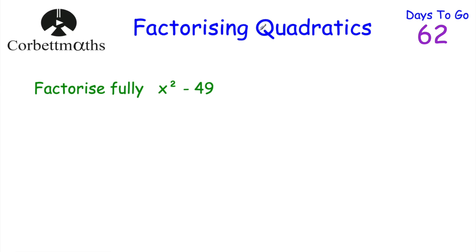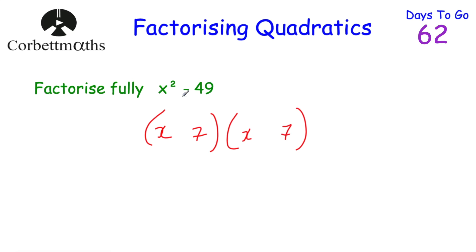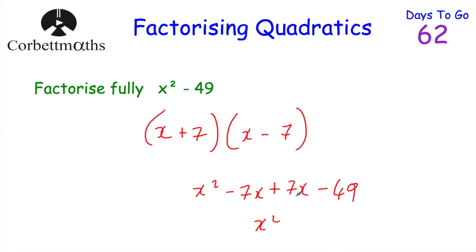Just before we move on to solving quadratics, I want to look at a special type of factorisation called the difference of two squares. If you have something squared minus something squared, you can factorise it by square-rooting both terms and writing two brackets — one with a plus sign and one with a minus sign. For example, x squared minus 49 factorises as x plus 7 times x minus 7. You can verify: x times x is x squared, x times negative 7 is minus 7x, 7 times x is plus 7x, and 7 times negative 7 is negative 49. The minus 7x and plus 7x cancel, leaving x squared minus 49.